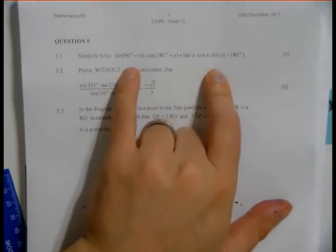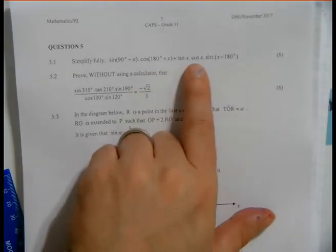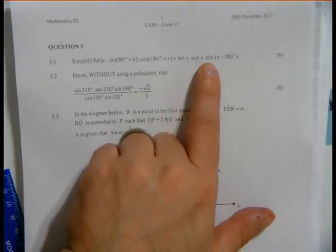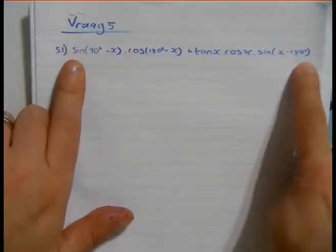Simplify sin(90-x) times cos(180+x) plus tan(x) multiplied by cos(x) multiplied by sin(x-180). Okay, so I just rewrote it.